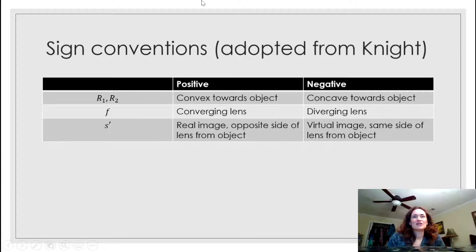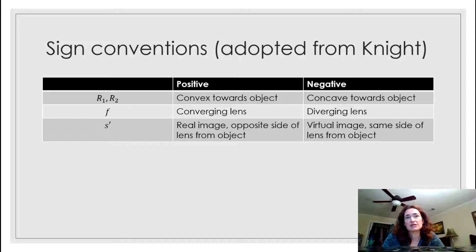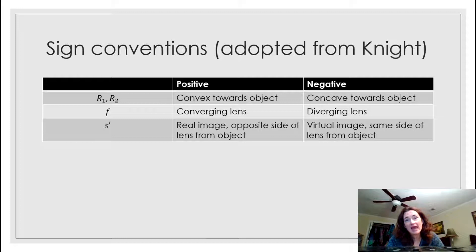Let's talk about the sign conventions of all the elements in the lens maker's equation. R1 and R2 — the radii of curvature on the near and far side of the object — are going to be positive if they're convex towards the object. So if the lens bulges toward the object, that's a positive radius of curvature.